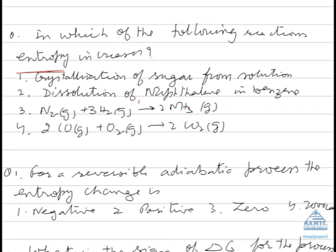So the answer will be dissolution of naphthalene and benzene. Now the next example is 4 mol of gas giving 2 mols, it means entropy is decreasing. Then 3 mols giving you 2 mols, again entropy is decreasing.